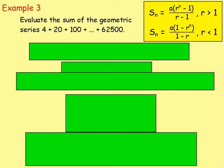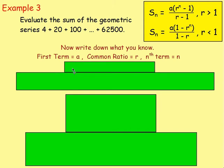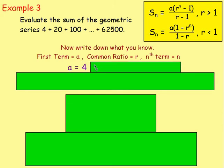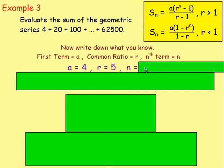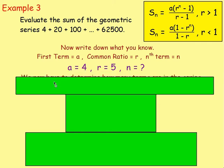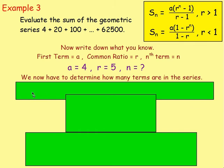Example 3: evaluate the sum of the geometric series 4 plus 20 plus 100, all the way up to 62,500. We're wanting the sum of a series, so write down what you know. The value of a is 4 — that's the first term. The value of r is 5: you can see you're multiplying by 5 every time — 4 times 5 is 20, 20 times 5 is 100. If unsure, divide the second term by the first: 20 divided by 4 is 5. And n — we need to determine how many terms are in this series.